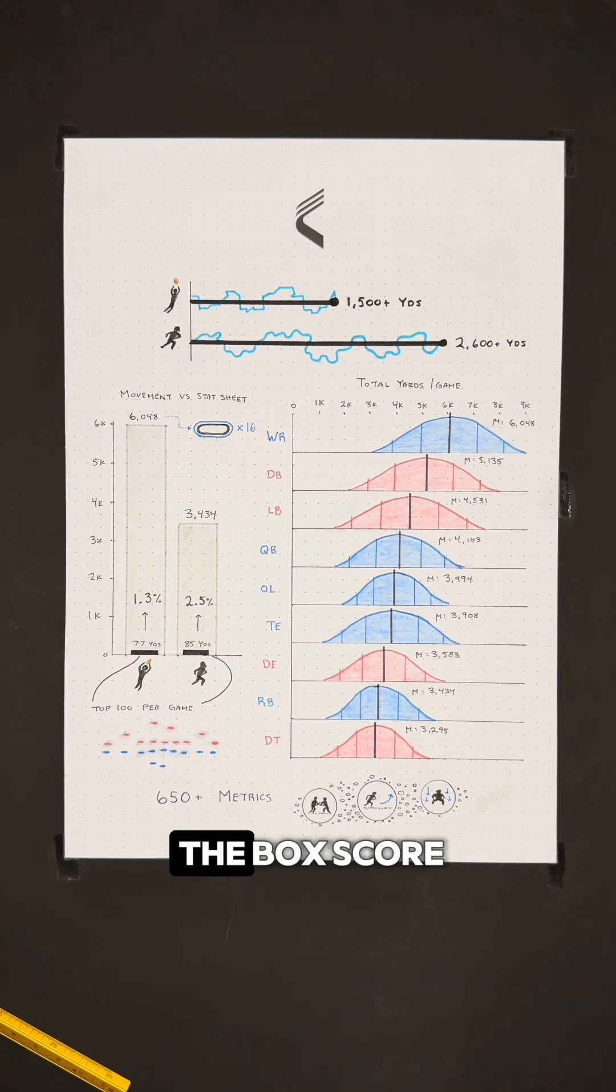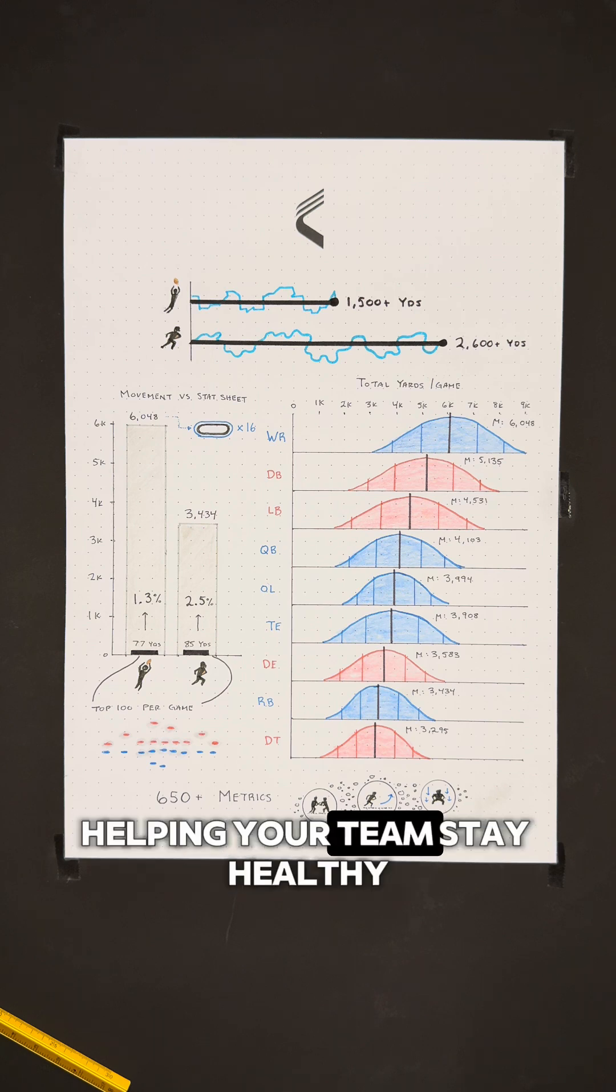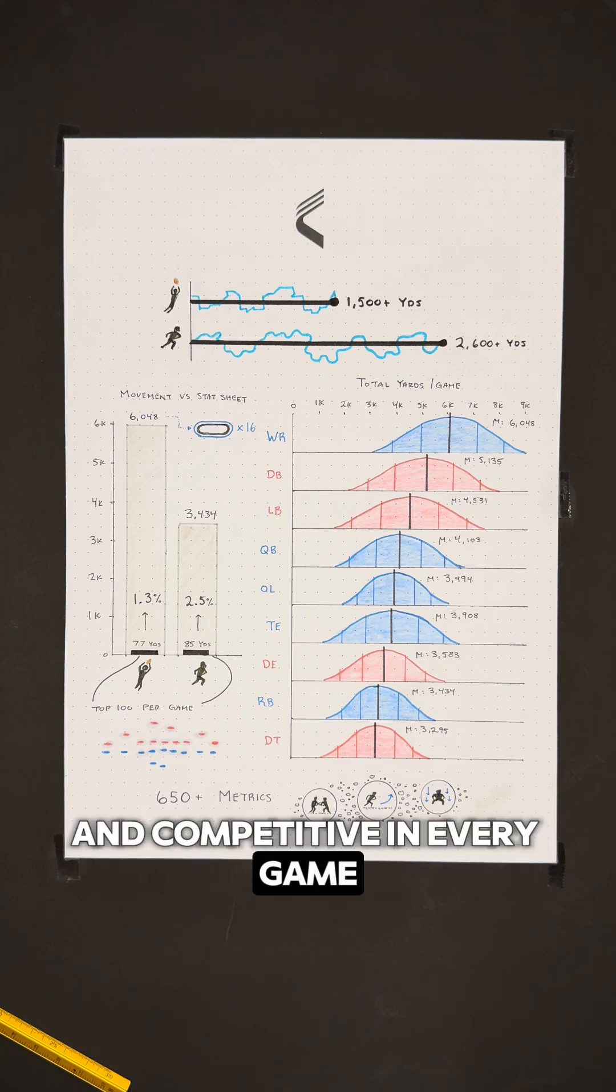If you're ready for your team to surpass the box score, discover how Catapult's 650 metrics provide unmatched insights into athlete performance, helping your team stay healthy and competitive in every game.